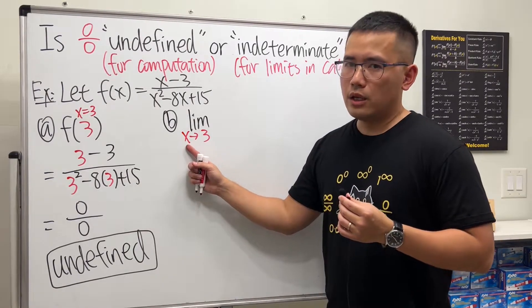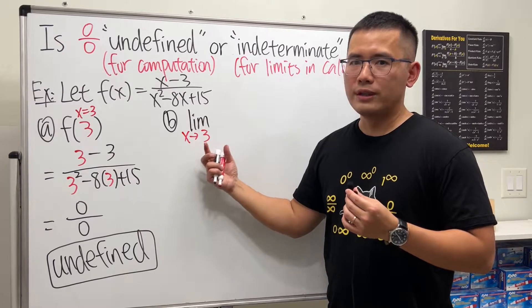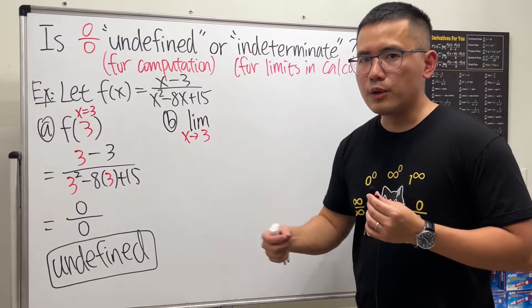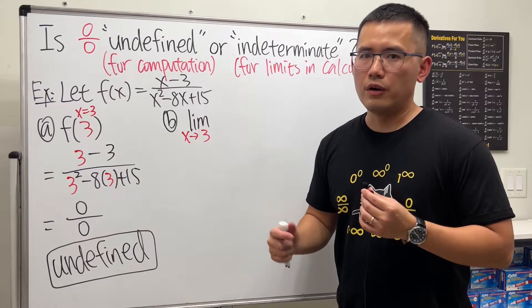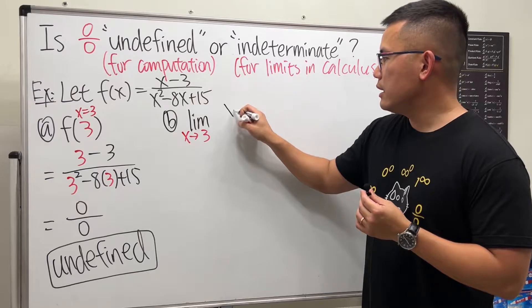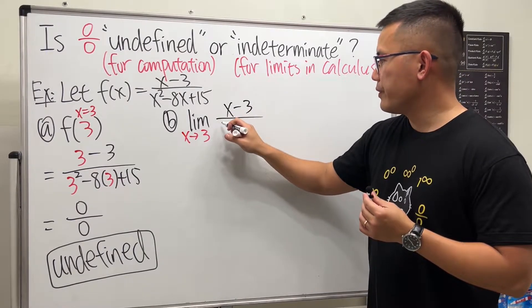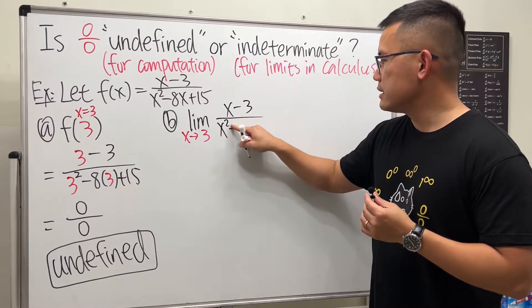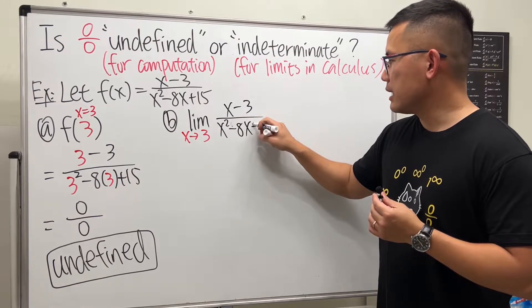x could be like 2.999 or 2.9999, it's getting closer and closer to 3, and I want to see the behavior of the function. And then of course, let me write down x minus 3 over x squared minus 8x plus 15.